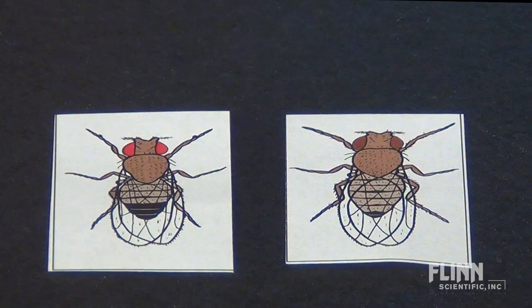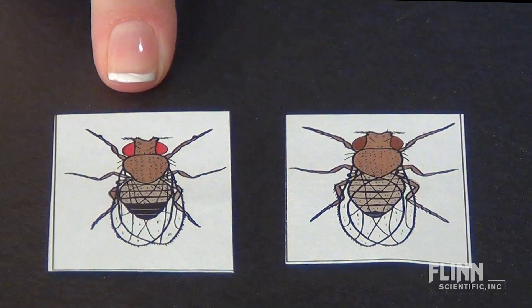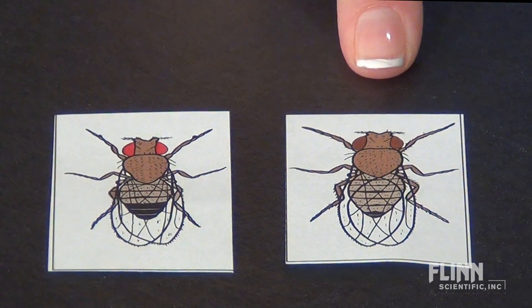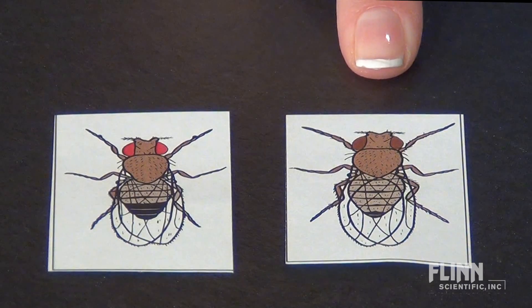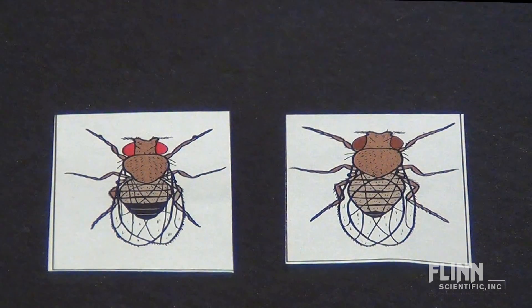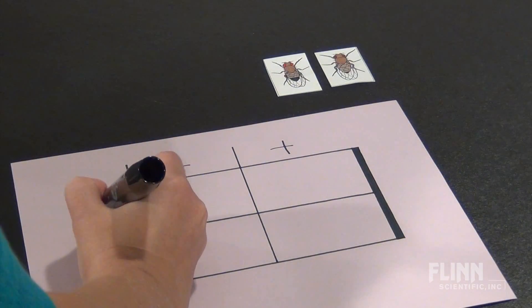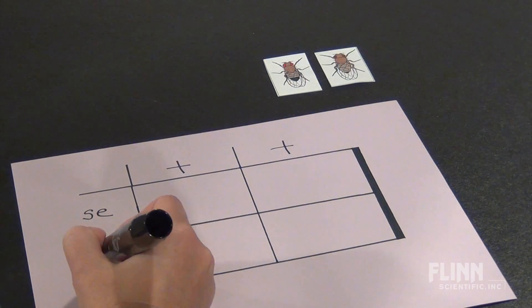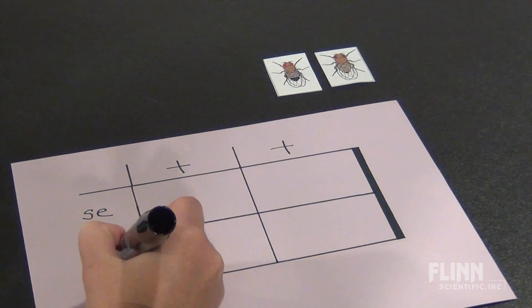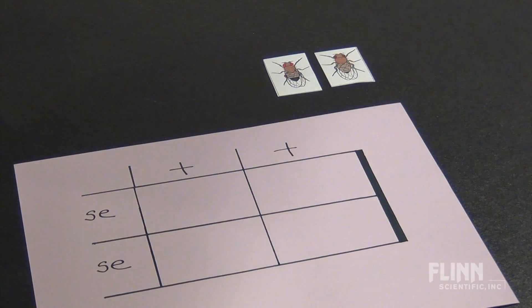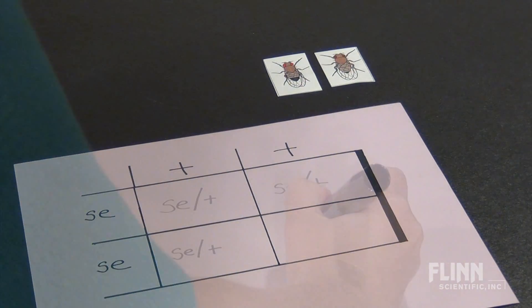Let's perform a simple cross of a wild type male, which has brick red eyes, and a homozygous recessive female, which has sepia eyes. Label the gametes on the Punnett square with the male gametes across the top and the female gametes down the left side.